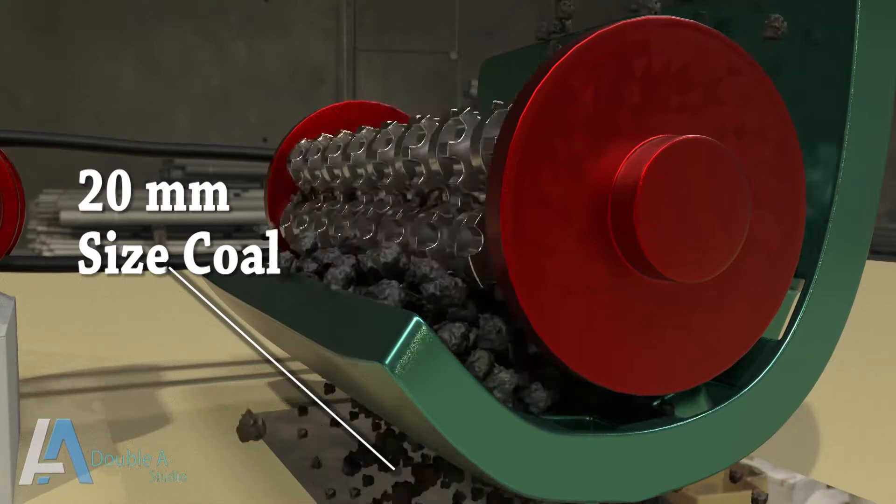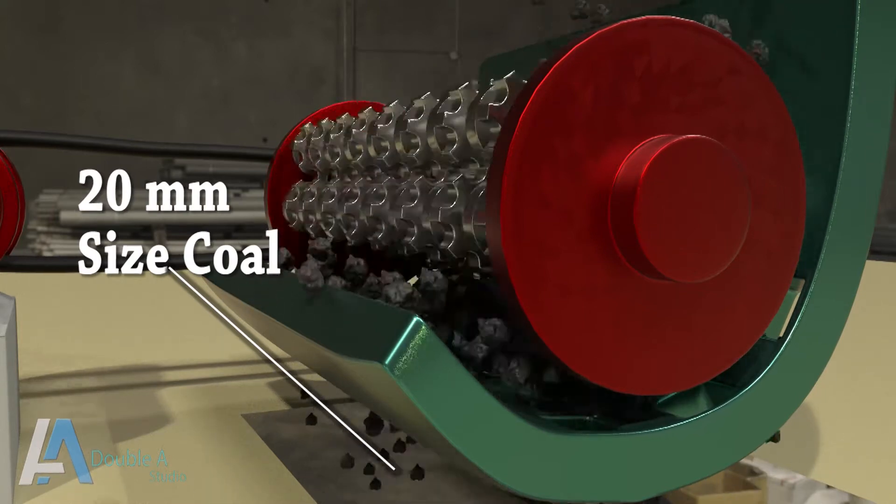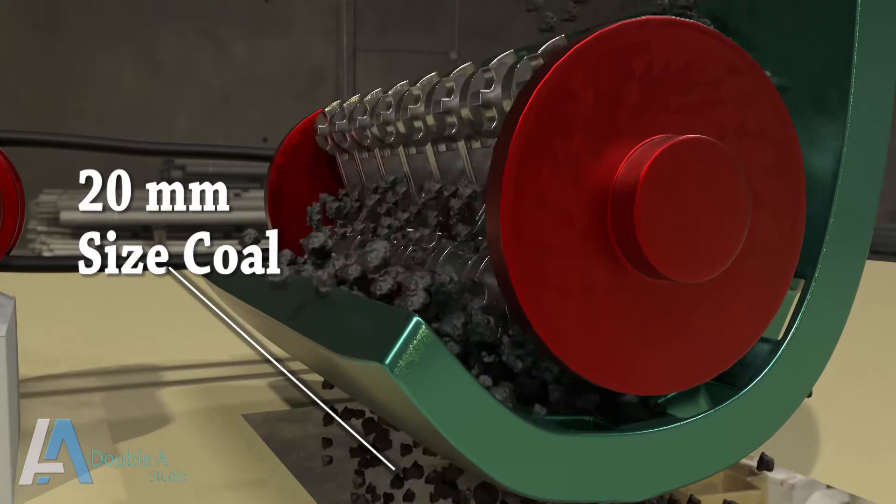Crushing reduces the size of coal up to 20 mm, which is further reduced and pulverized.